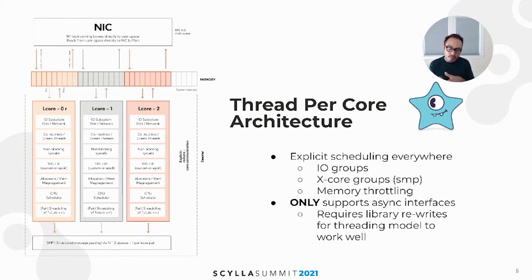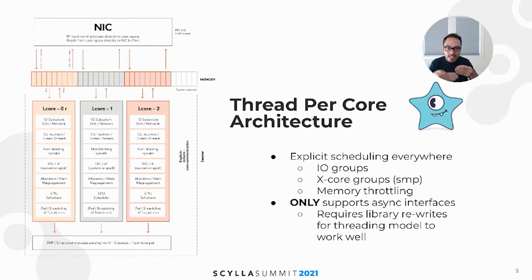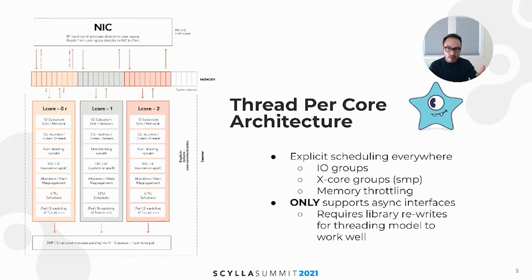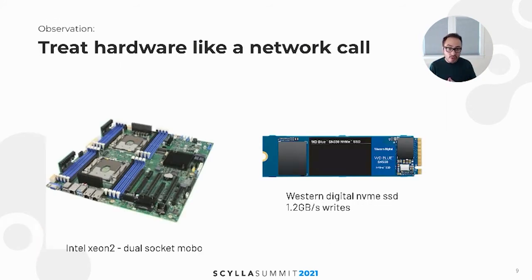Sistar — and RedPanda is built on top of Sistar — gives us this thread-per-core architecture. What is nice about this particular thread-per-core architecture is that everything becomes explicit. Asynchronicity becomes a first-class citizen. In this imaginary computer on the left, you can see that you divide memory on a per-core basis. You boot the machine, it splits up the memory per core, and you get really nice core locality. As a programmer, you're always operating either implicitly in a particular core-local context, or explicitly making a jump to a remote core.